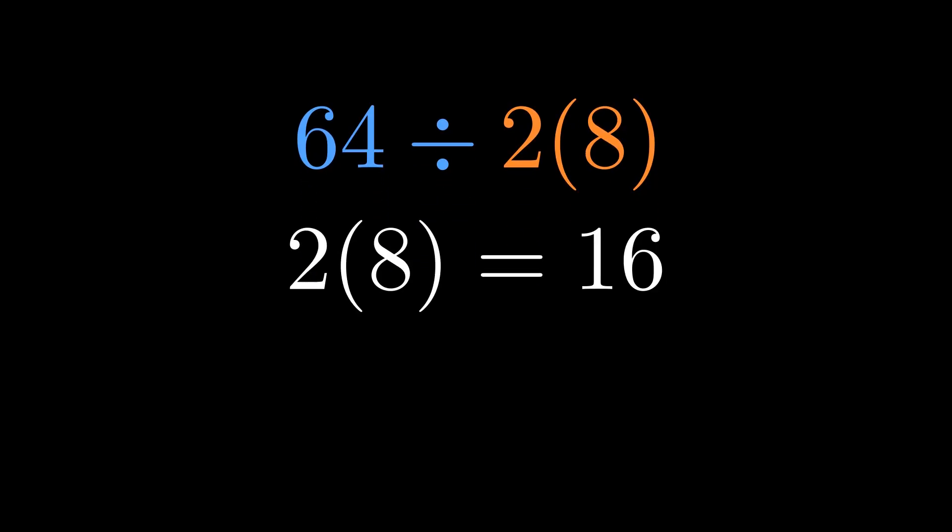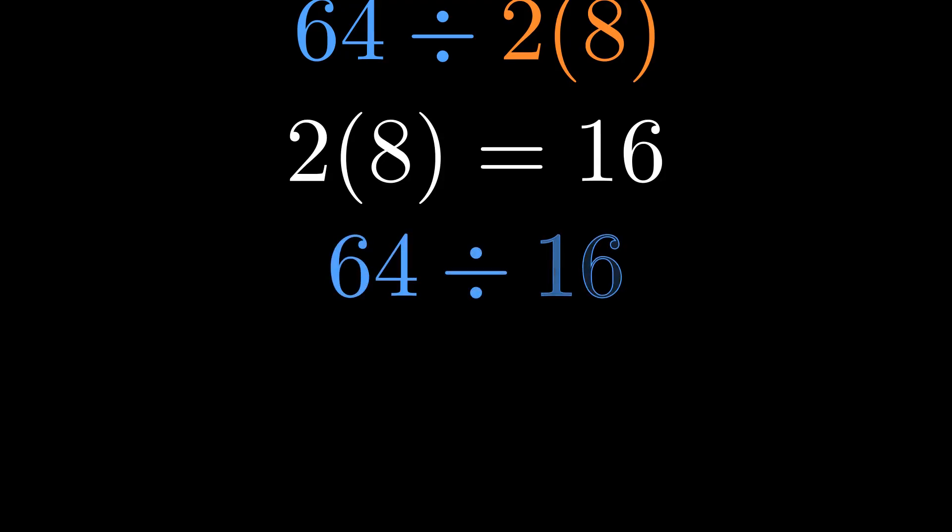So if we do 2 times 8 first, we get 16. That leaves us with 64 divided by 16, which equals 4. That's team 4's answer. It feels right, it looks right, but is it right?